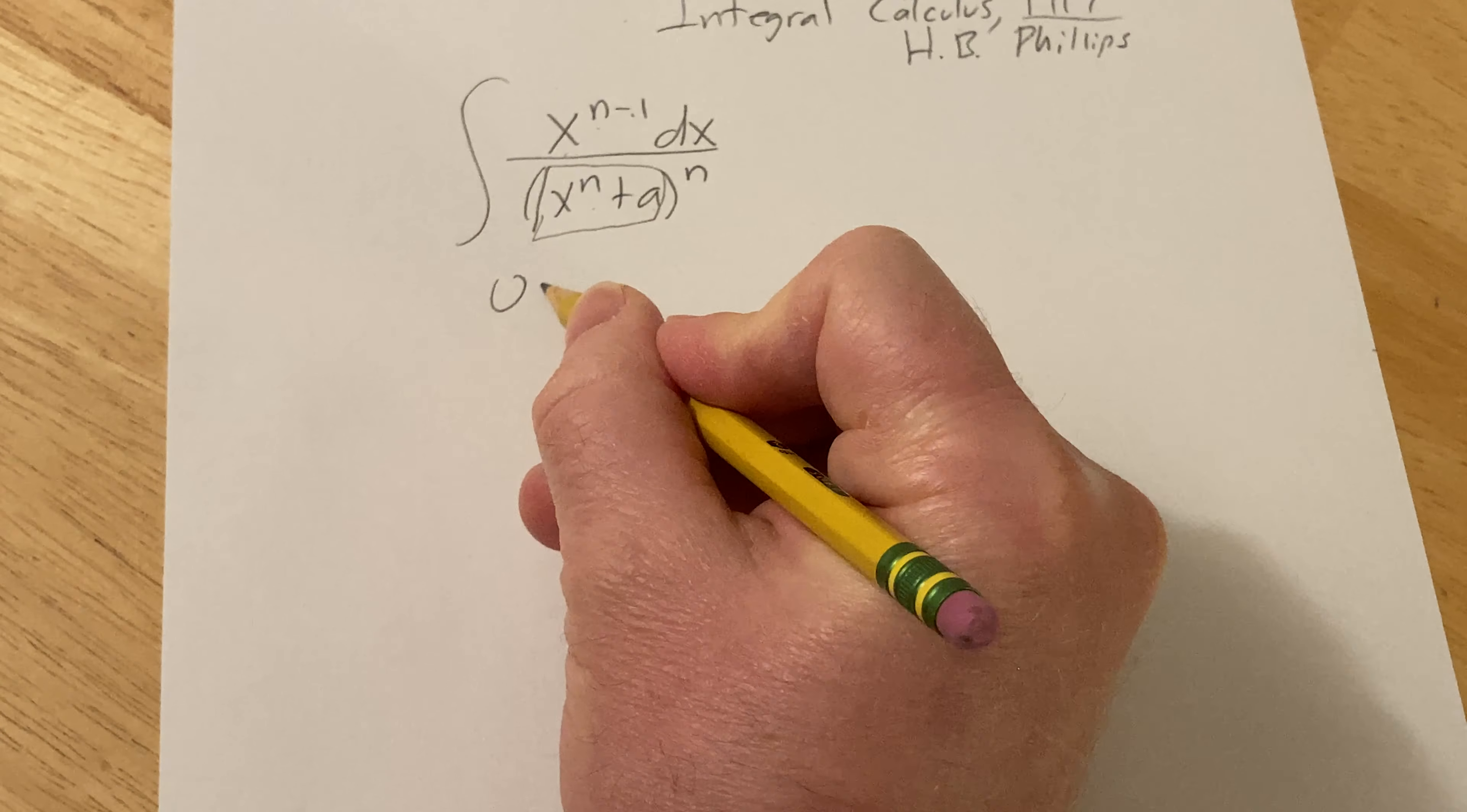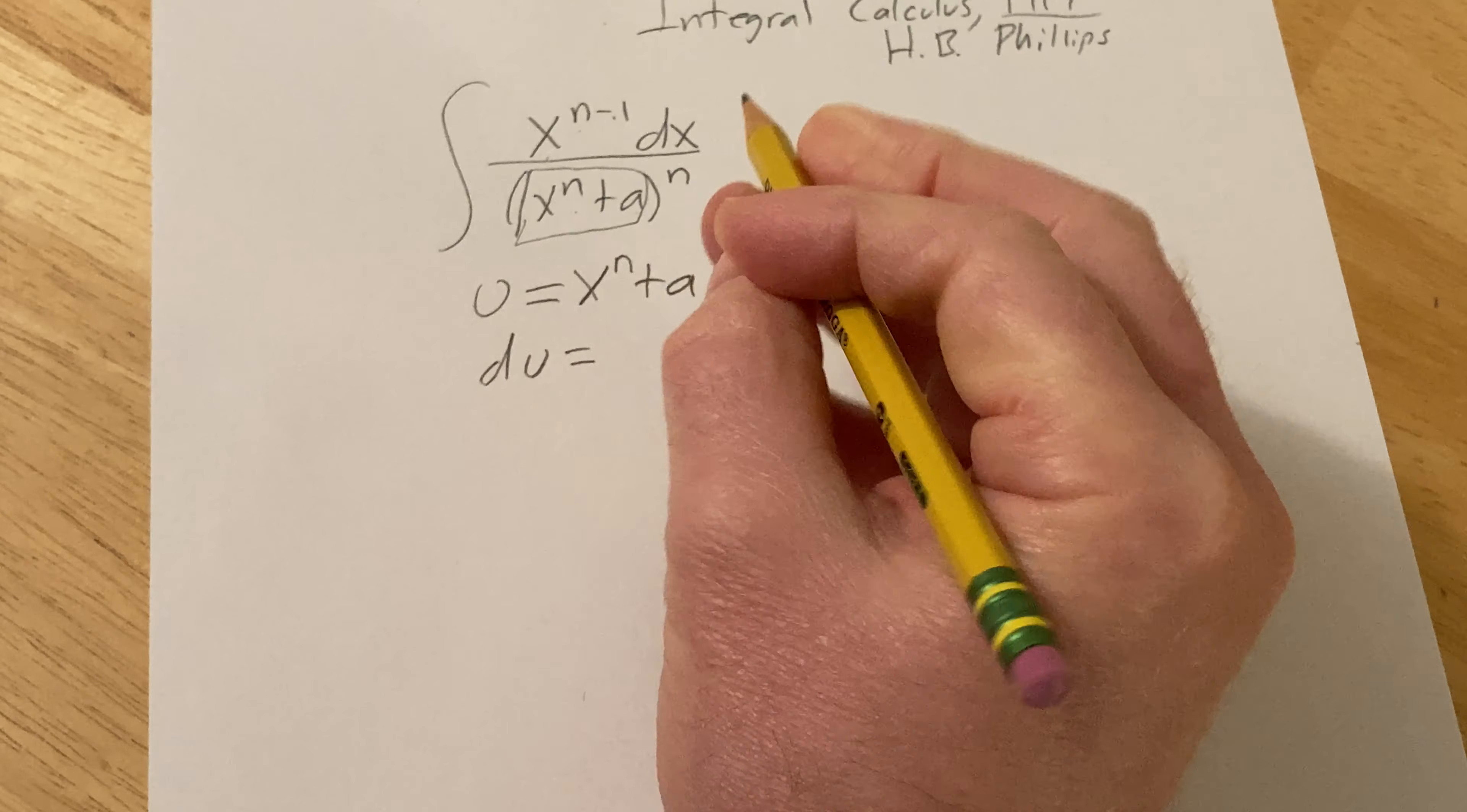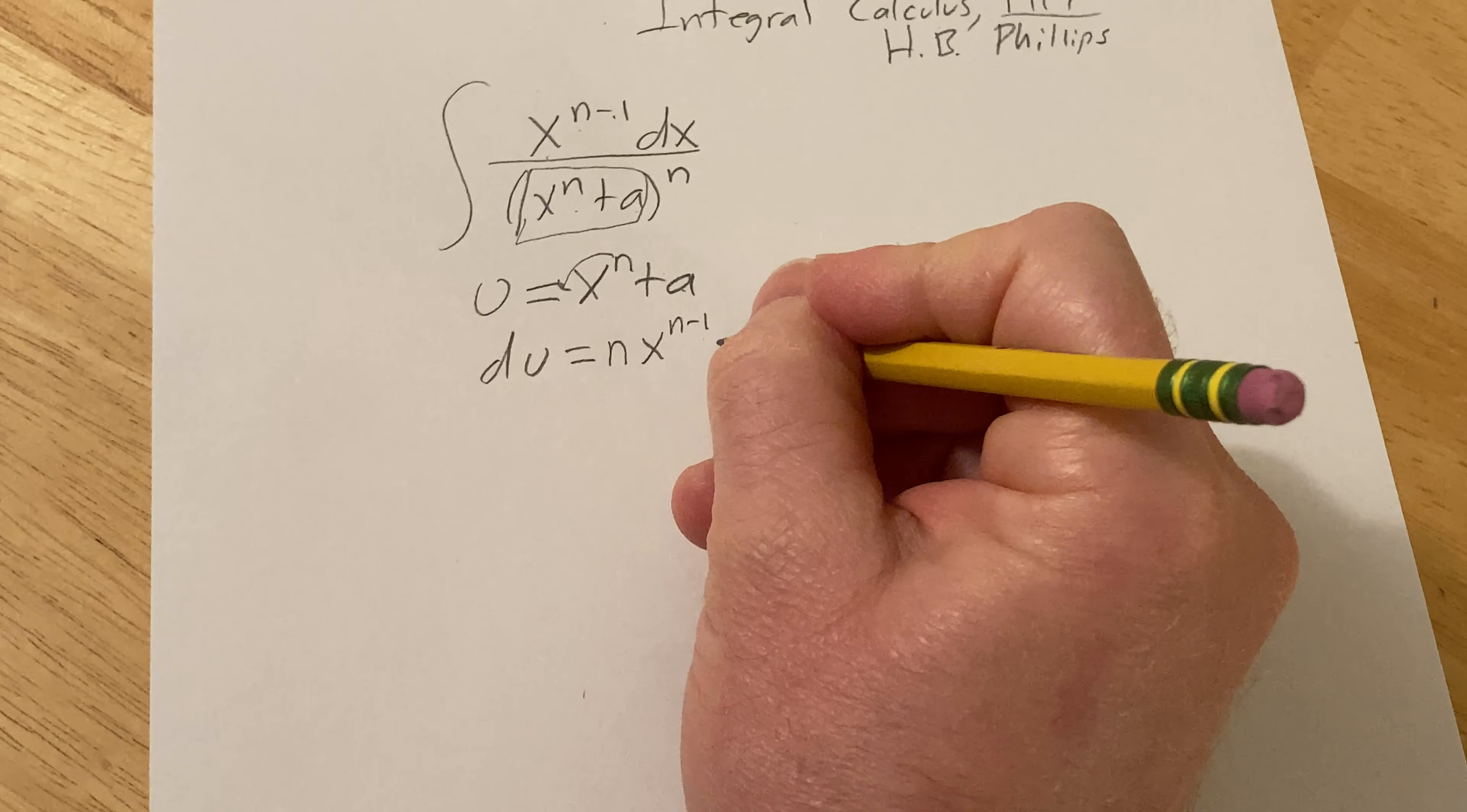So we'll let u be equal to x to the n plus a and then du. We'll take the derivative. You bring down the n and then you subtract 1 from the exponent and the derivative of a is 0 so you don't write that and then dx.